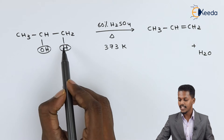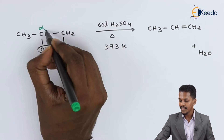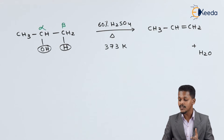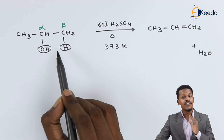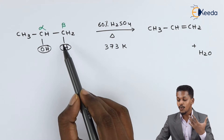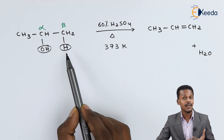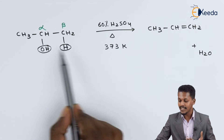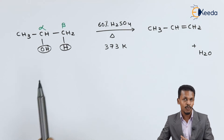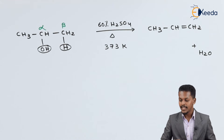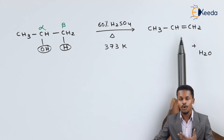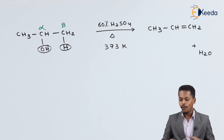The hydrogen is removed from the beta carbon atom. This is very important to understand: the hydrogen will only be eliminated from the beta carbon atom — it will not be removed from the gamma carbon atom. This gives us prop-1-ene, or propene, as the product.